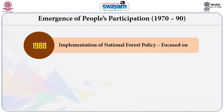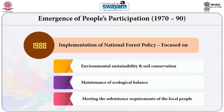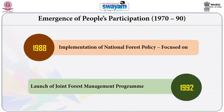Based on the experiences of the Social Forestry Program, India implemented its National Forest Policy in 1988. The new National Forest Policy focused on environmental sustainability, soil conservation, maintenance of ecological balance, and more importantly meeting the subsistence requirements of local people. Joint Forest Management also recognized people's demand, requirement, and dependence on forest, making it clear that it is impossible to govern forest without involving the people who depend upon it.